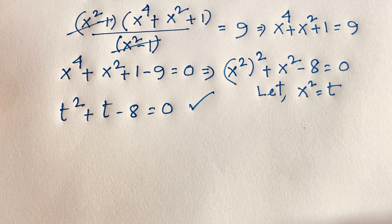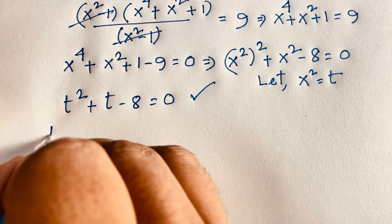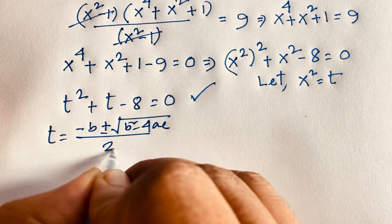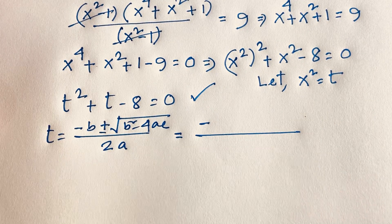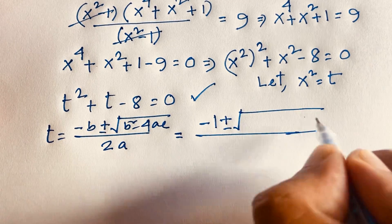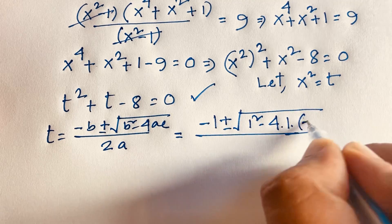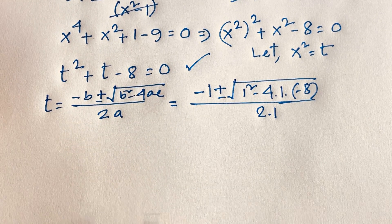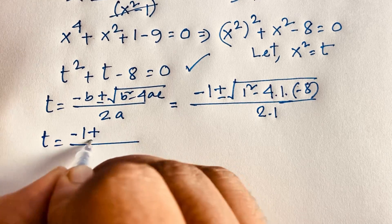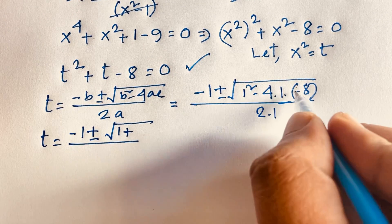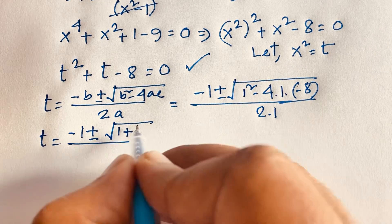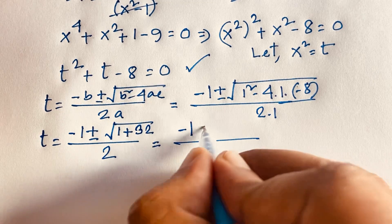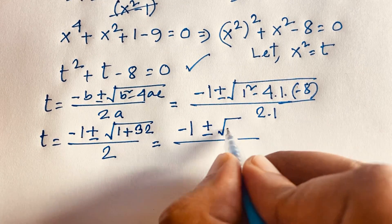Following the quadratic formula, t equals negative b plus or minus square root of b squared minus 4ac, all over 2a. Here b is 1, so: t equals negative 1 plus or minus square root of 1 squared minus 4 times 1 times negative 8, over 2 times 1. The negative times negative makes the sign positive, so 4 times 8 is 32, giving us square root of 1 plus 32 over 2.